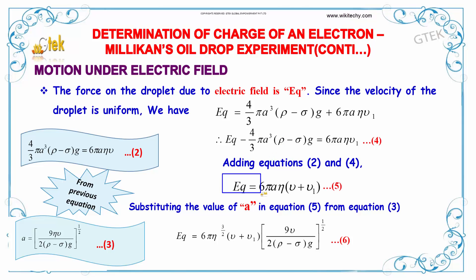Substituting the value, we add equations 2 and 4. By substituting, you get 6 pi a nu times V plus V1. Substituting the value, Eq equals 6 pi a nu times V plus V1 into 9 nu V by 2 into rho minus sigma into g, power 1 by 2.